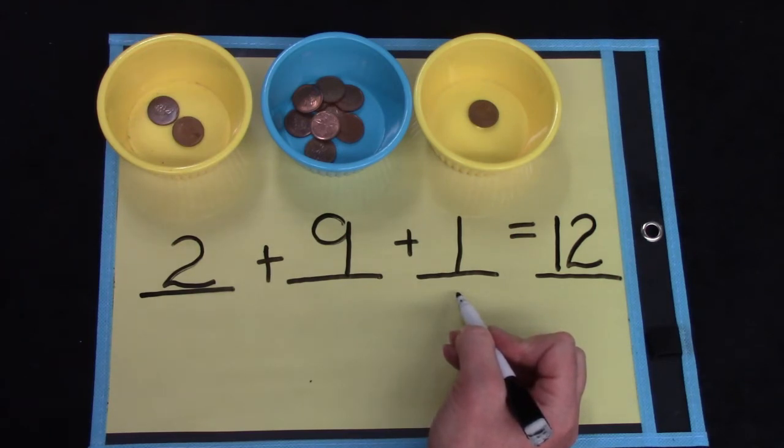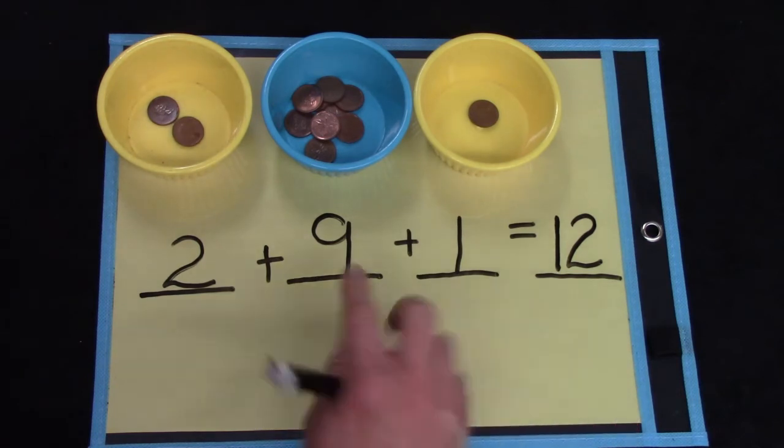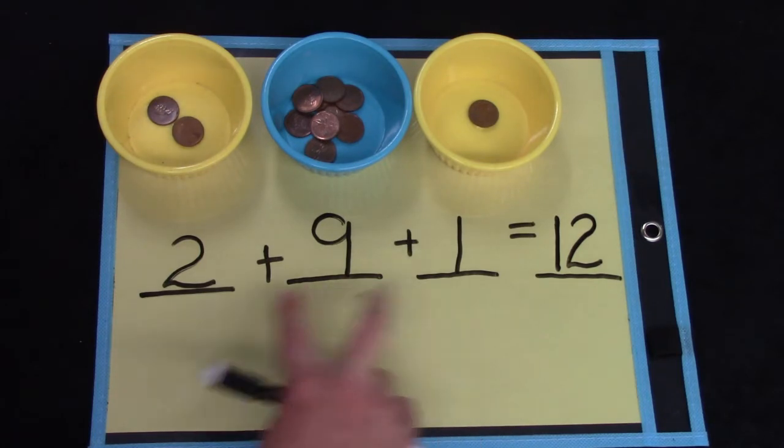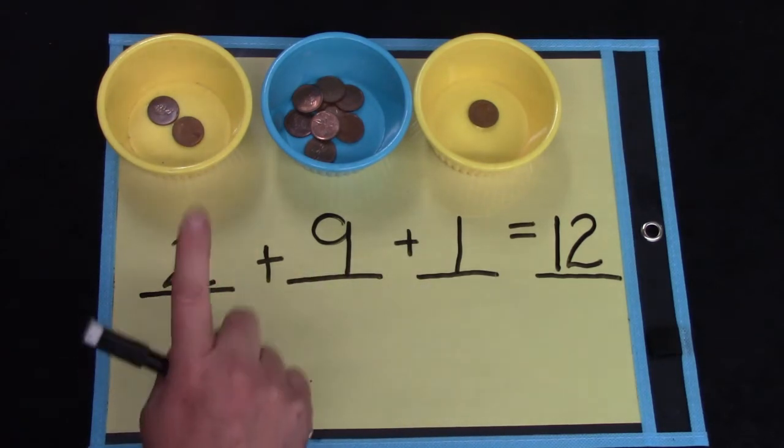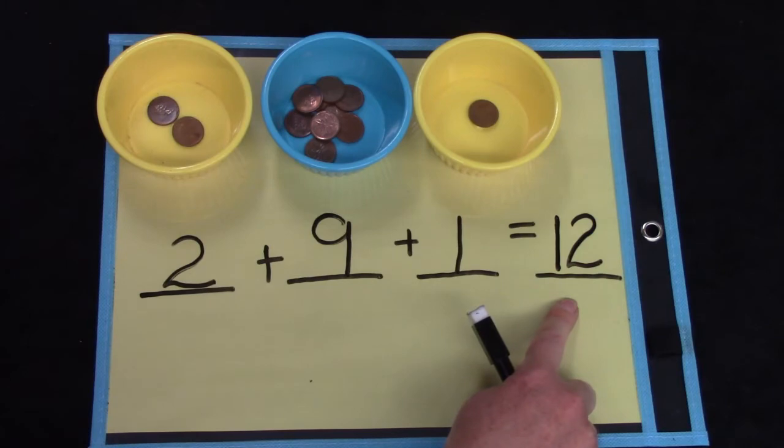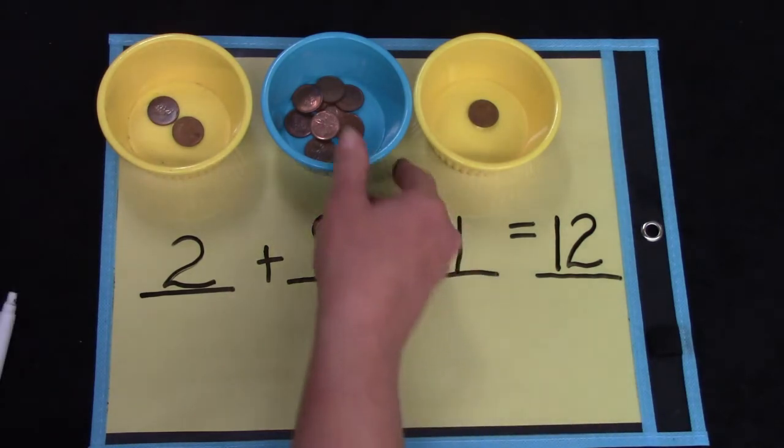I could also look for numbers that go together like nine and one. Nine plus one is ten. Ten plus two. Ten, eleven, twelve. That would be twelve. There's many different ways to add it out.